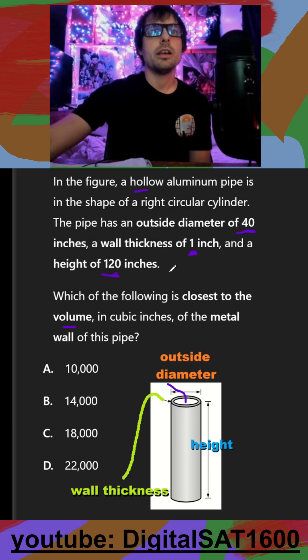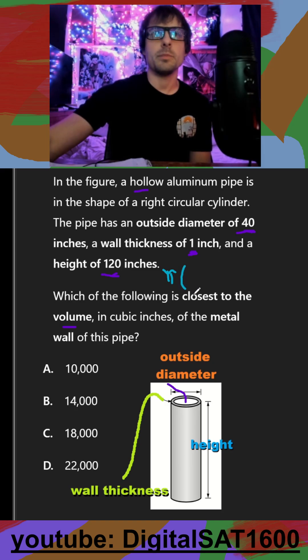the bigger cylinder is going to be pi times the radius of the bigger cylinder. So since the diameter is 40, it's just going to be 20 squared times our height, which is 120.